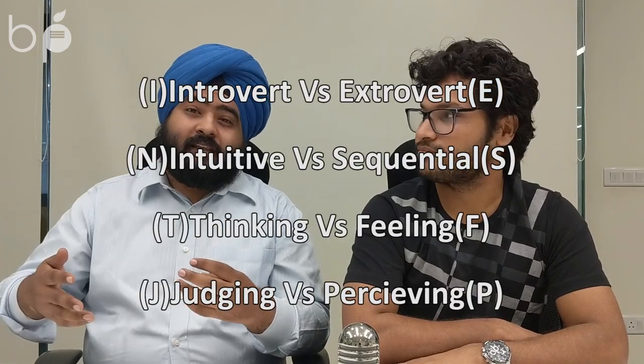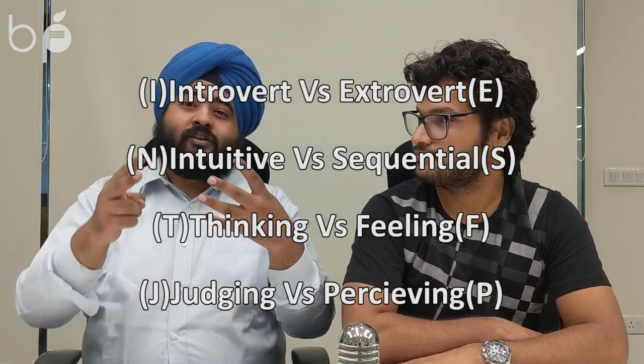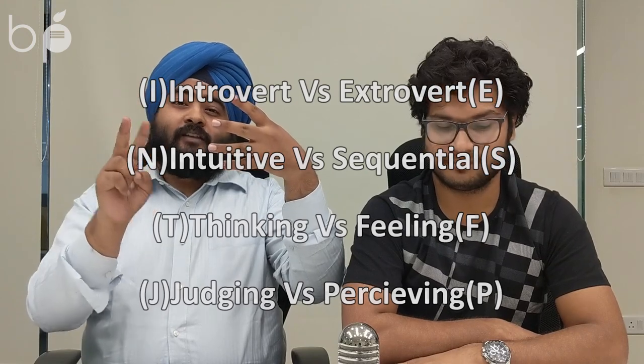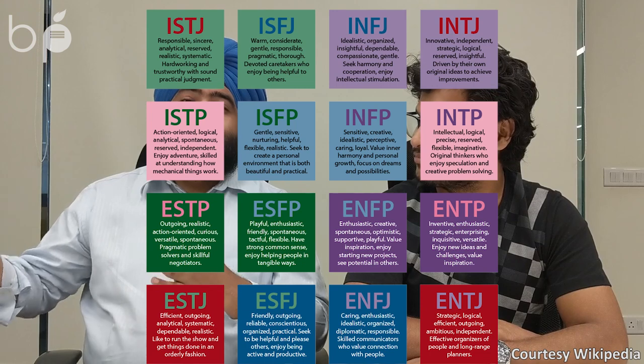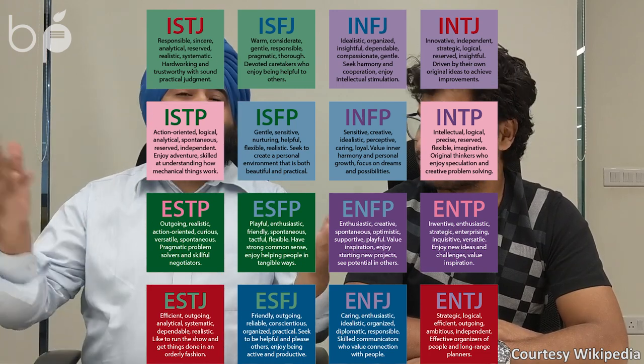These four parameters add up to 16 different personality types because each of them has two options. This makes 16 personality types — basically saying there are 16 types of people in the world. For example, Jeff Bezos is an ISTJ, and Warren Buffet shares the same personality type as Jeff Bezos. Similarly, Donald Trump and George Bush are also the same personality type.